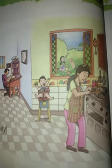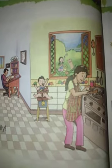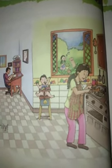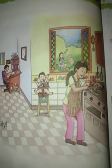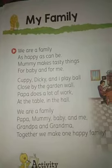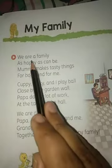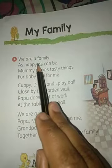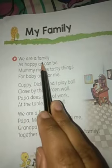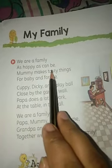How many persons are there? One, two, three, four, five, six. Yes — persons, animal and toy we can see over here. Good. My family. We are a family — hum ek pariwar hai. As happy as can be.